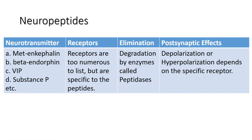A neuropeptide is a neurotransmitter molecule made up of chains of amino acids connected by peptide bonds — this is what a protein is, but the term protein implies a certain length to the molecule. Some neuropeptides are quite short, such as met-enkephalin, which is 5 amino acids long. Others are long, such as beta-endorphin, which is 31 amino acids long. Neuropeptides are often released at synapses in combination with other neurotransmitters, and they often act as hormones in other systems of the body, such as vasoactive intestinal peptide or substance P. Neuropeptides such as substance P and endorphins are important in the mediation of pain signals.